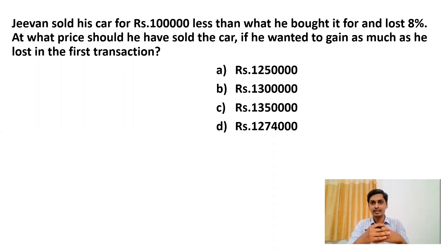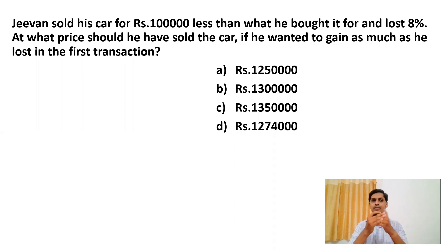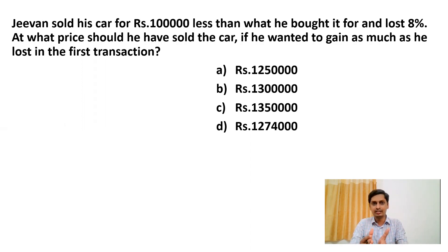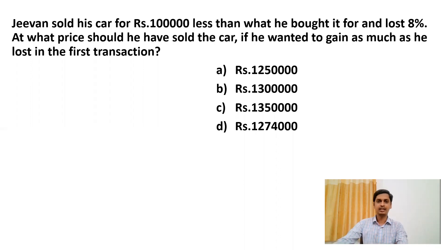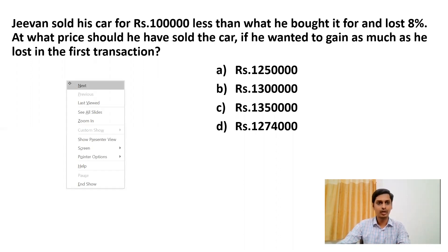G1 sold his car for rupees 1 lakh less than what he bought it for and lost 8 percent. At what price would he have sold the car if he wanted to gain as much as he lost in the first transaction? We know the cost price is 100 percent, so he lost 8 percent — meaning he sold it for only 92 percent. Because of this 1 lakh rupees he lost 8 percent, so 8 percent is equivalent to 1 lakh.